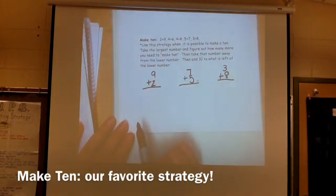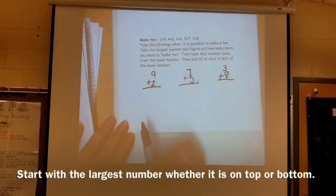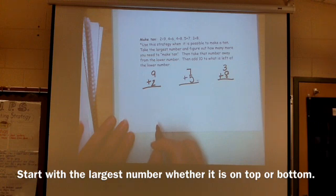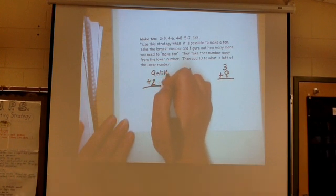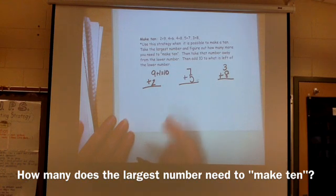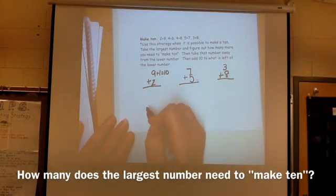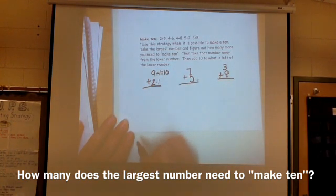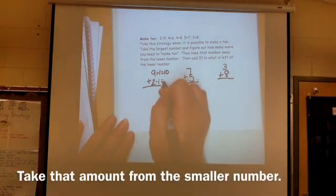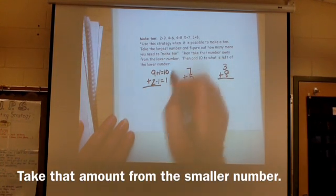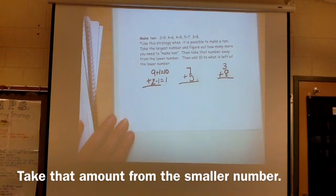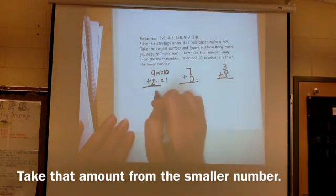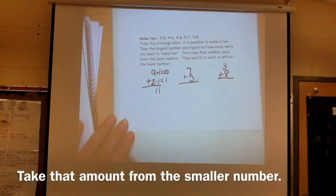When you're faced with a problem like 9 plus 2, I tell the kids to take the largest number. Which one's the largest? Well, it's 9. And then I ask them, well, how many do you have to add to the 9 to make it equal 10? Well, you have to add 1 to the 9, and that's going to equal 10. Well, where do you get that 1? You're going to have to grab it from the 2. So, 2, you have to take away that 1 that you gave to 9. Well, what does that equal? That equals 1. Now, I can just add this up quite easily, because most kids know 10 plus anything. They're really good at that. So, 10 plus 1 is 11, and that's my answer.